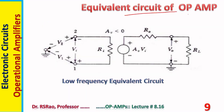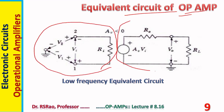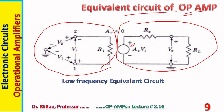Here is shown the equivalent circuit of the op-amp. On the input side, terminal 2 is the inverting terminal and terminal 1 is the non-inverting terminal. R_I is the input resistance. On the output side there is a voltage source A·V_i, R_0 is the output resistance, V_0 is the output voltage, and R_L is the load. This is a low-frequency equivalent circuit with no reactive elements. When frequency rises, reactive elements start influencing the performance and must be taken into account for high-frequency analysis.